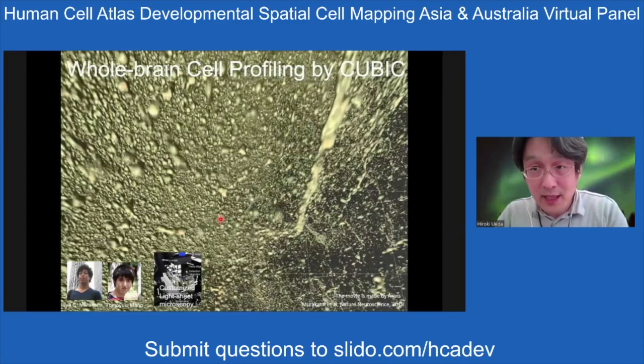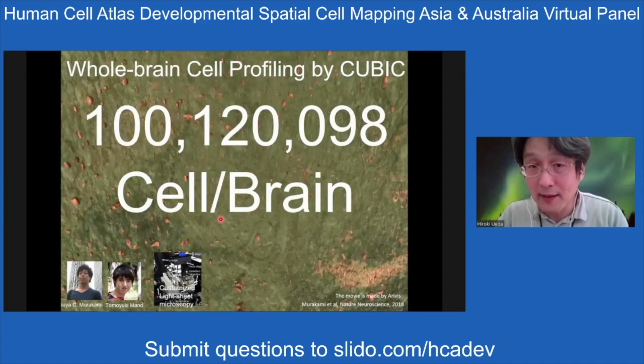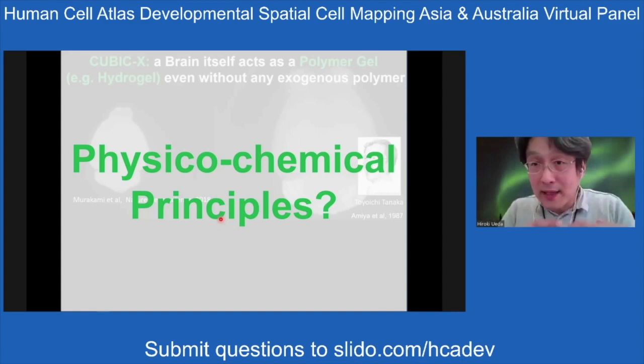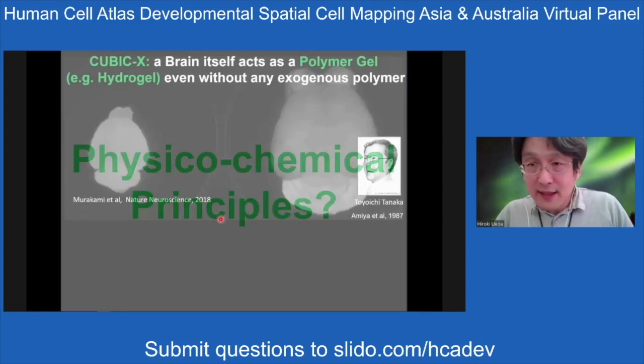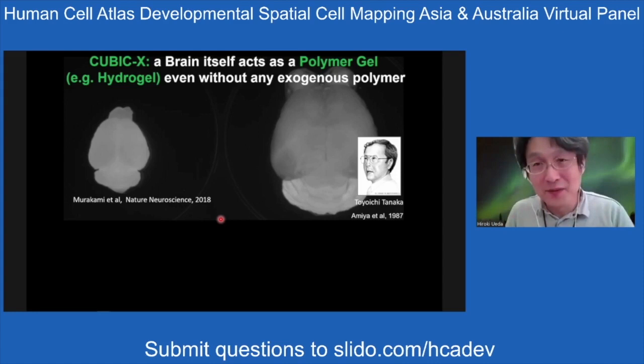We built a light sheet microscope specialized for the expanded brain, and tried to visualize every single cell in mouse brain — which turned out to be 100 million cells. Based on that, we are now building a cell address. During that time, we also found that our organs reversibly expand and shrink, meaning our organs behave like polymer gels.